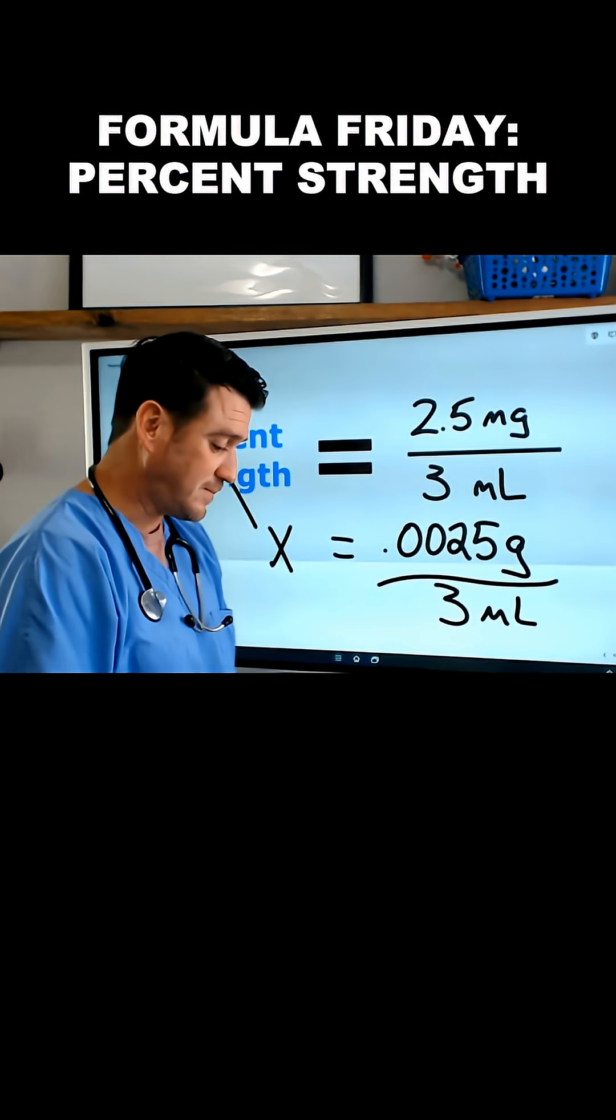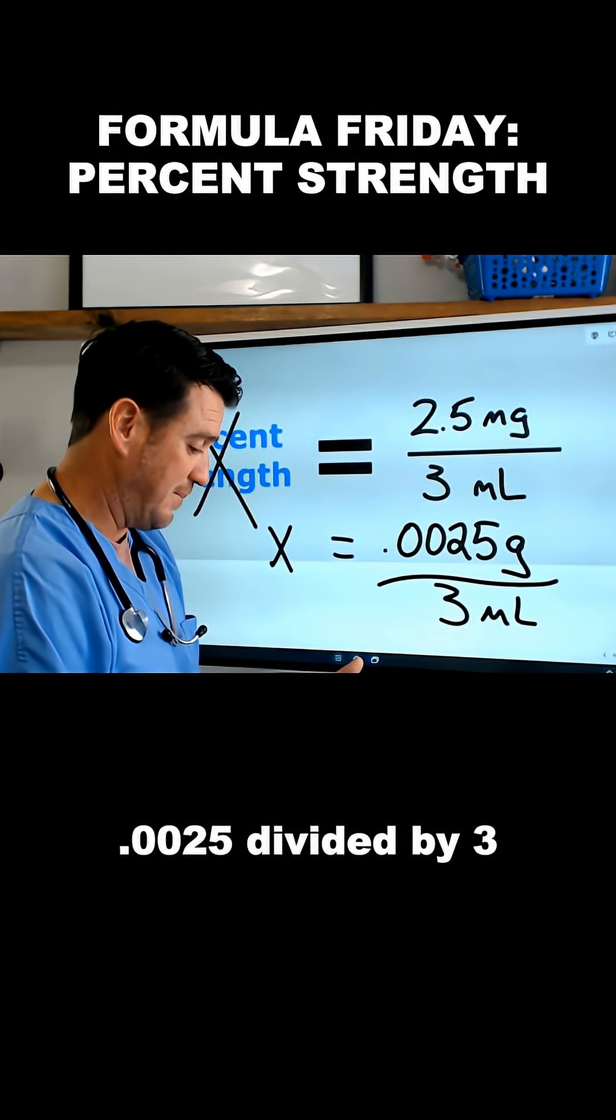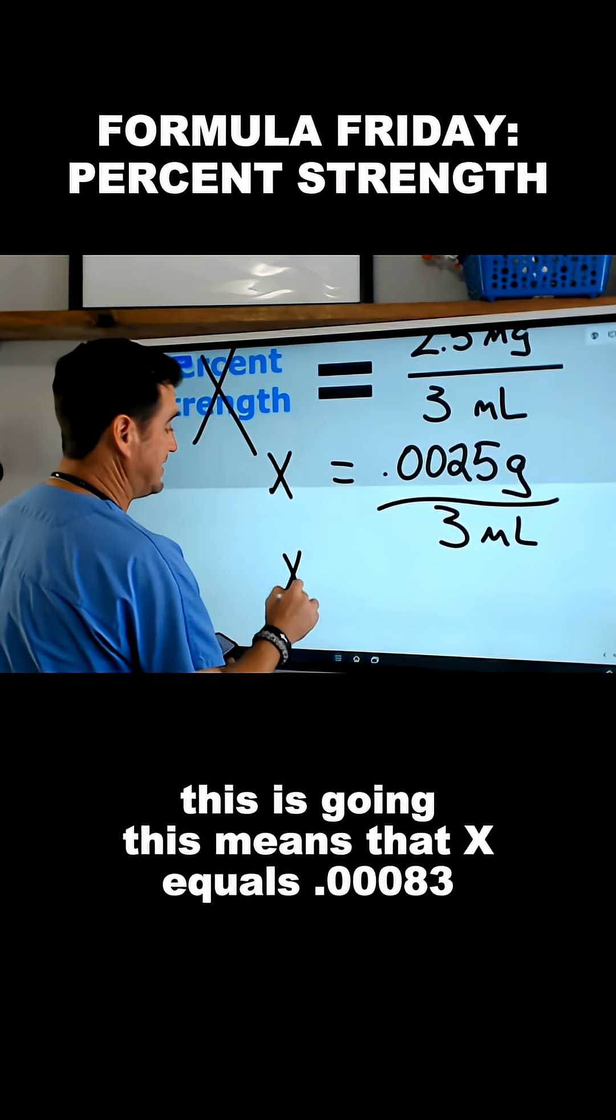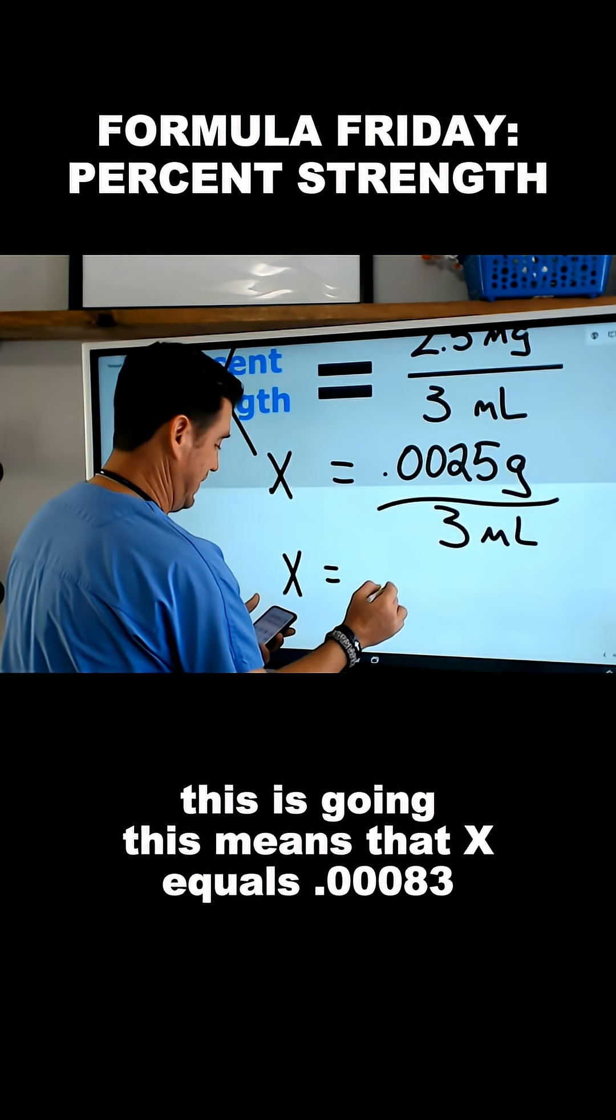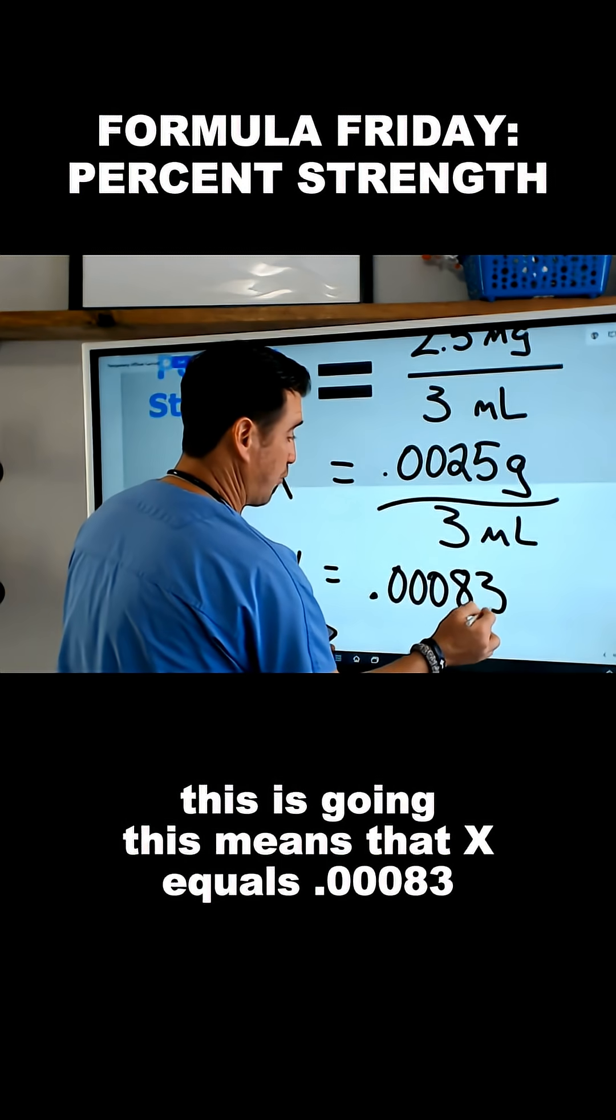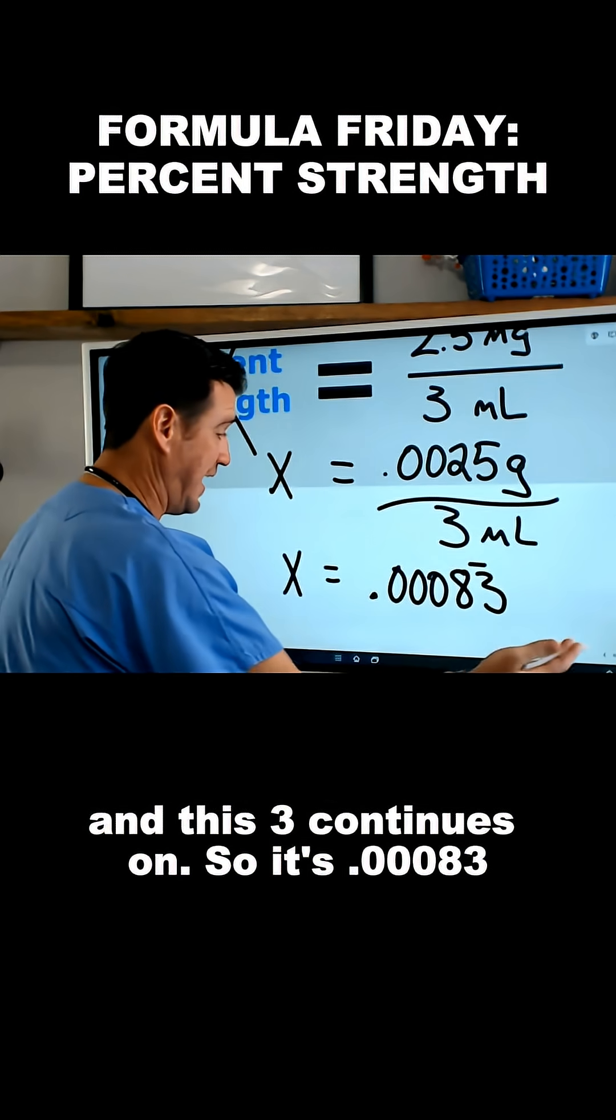Now, when we do the math for that, what we get here is 0.0025 divided by 3. This means that X equals 0.00083 and this 3 continues on. So it's 0.00083.